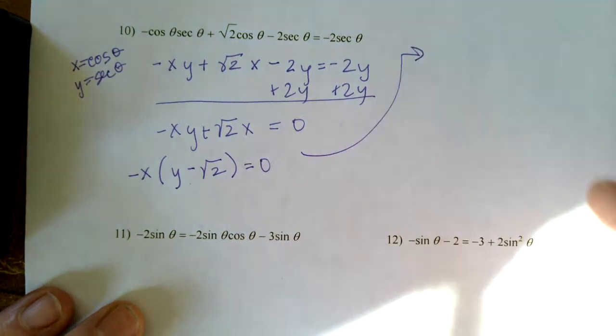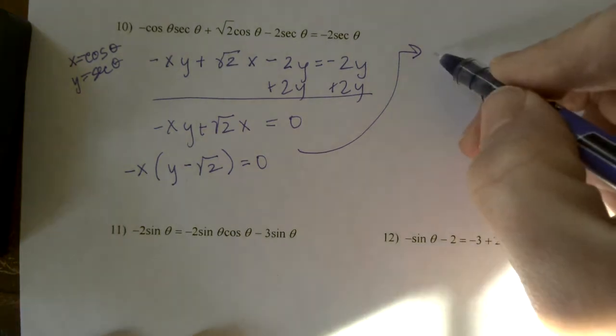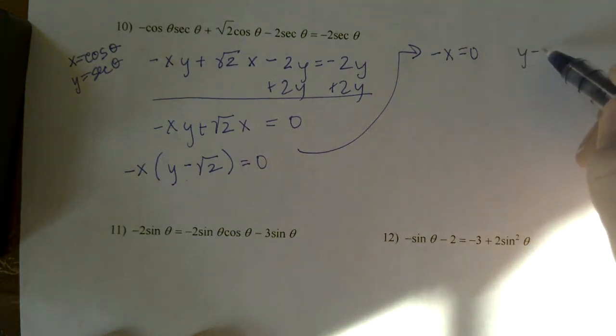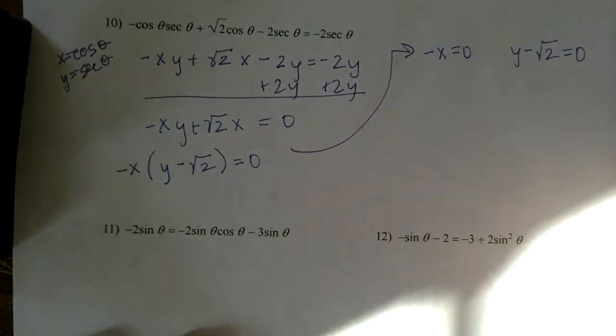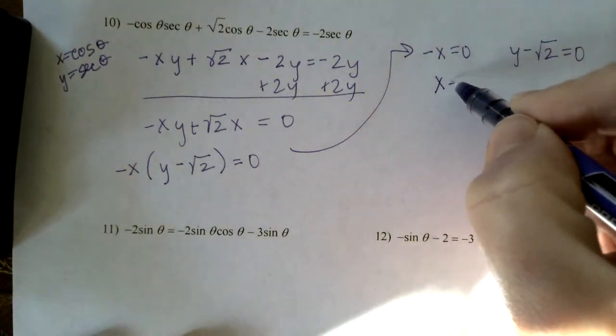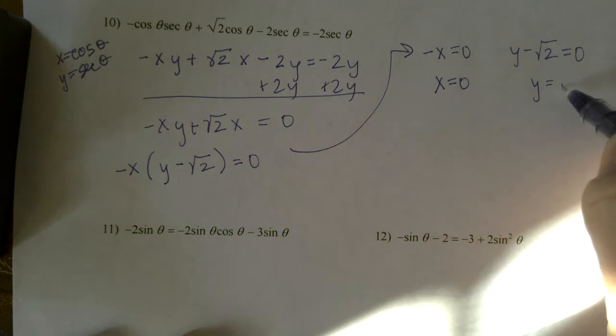So y minus the square root of 2 is what's left in each equals zero. And then when I go to do my solving, I would say that negative x equals zero and y minus the square root of 2 equals zero. This is when x is zero and this is when y is the square root of 2.